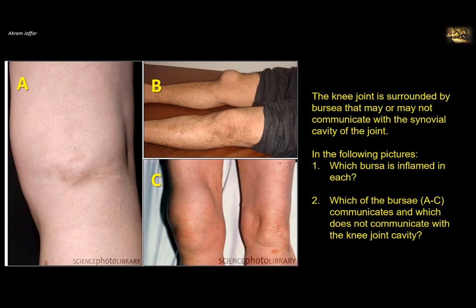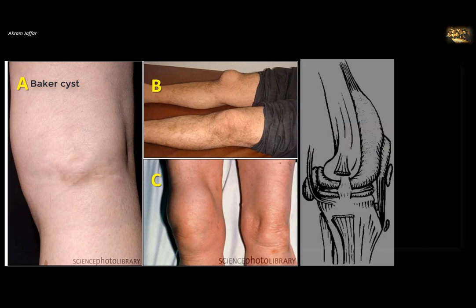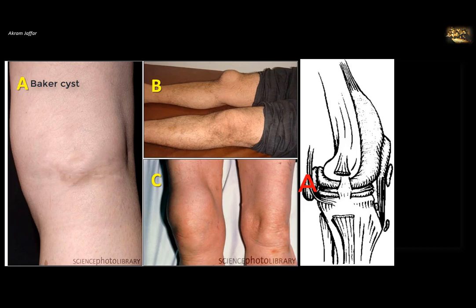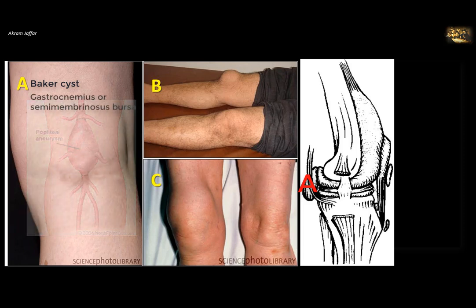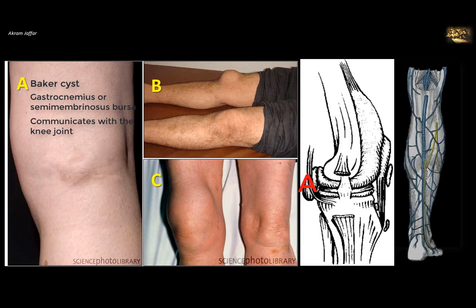The knee joint is surrounded by bursae that may or may not communicate with the synovial cavity. In picture A, this outpouching at the back of the popliteal fossa is a Baker's cyst — a common cystic formation resulting from herniation of the bursa related to the medial head of gastrocnemius and semimembranosus muscles. It must be differentiated from a popliteal artery aneurysm, which would cause pulsatile swelling and a bruit. Baker's cyst communicates with the synovial joint and should also be distinguished from a saphenovarix of the small saphenous vein.